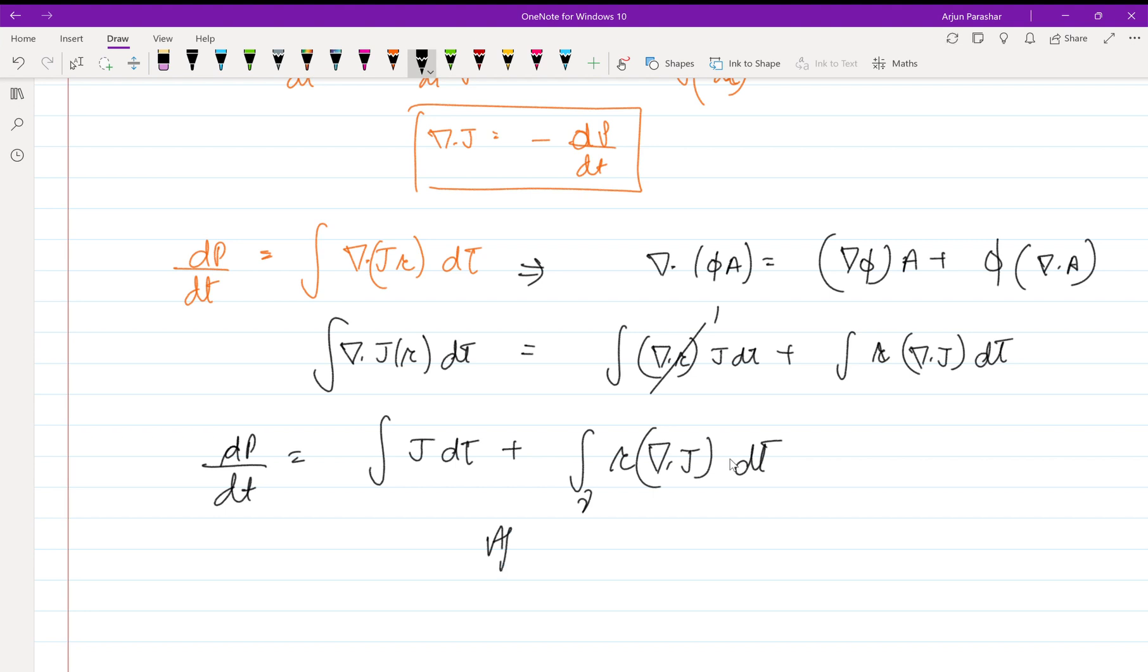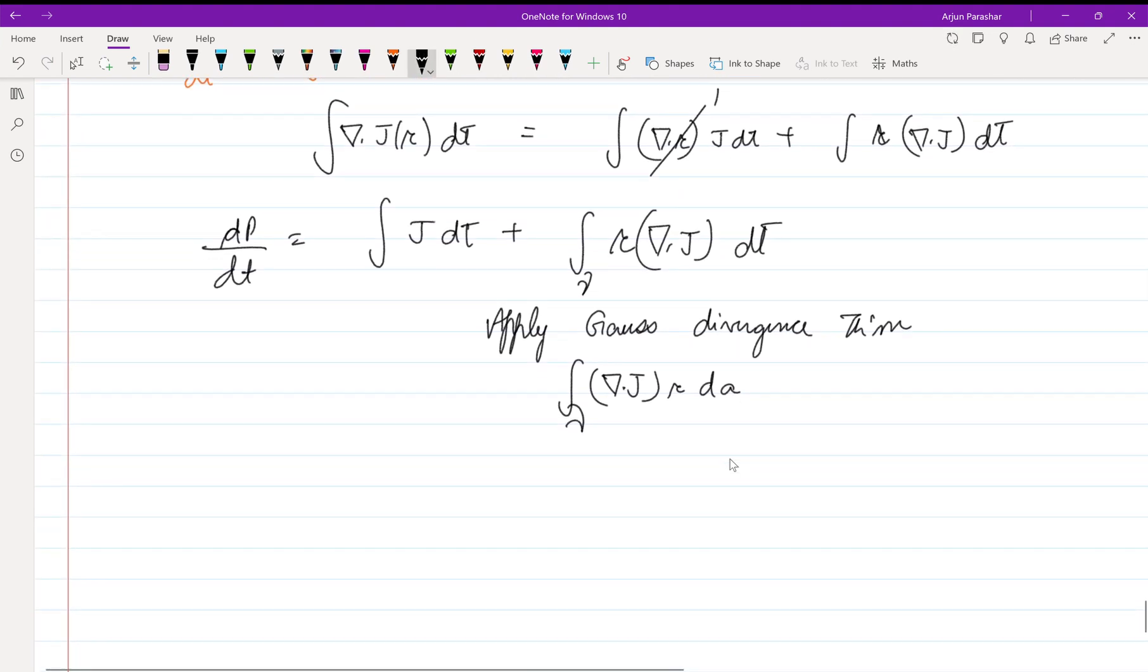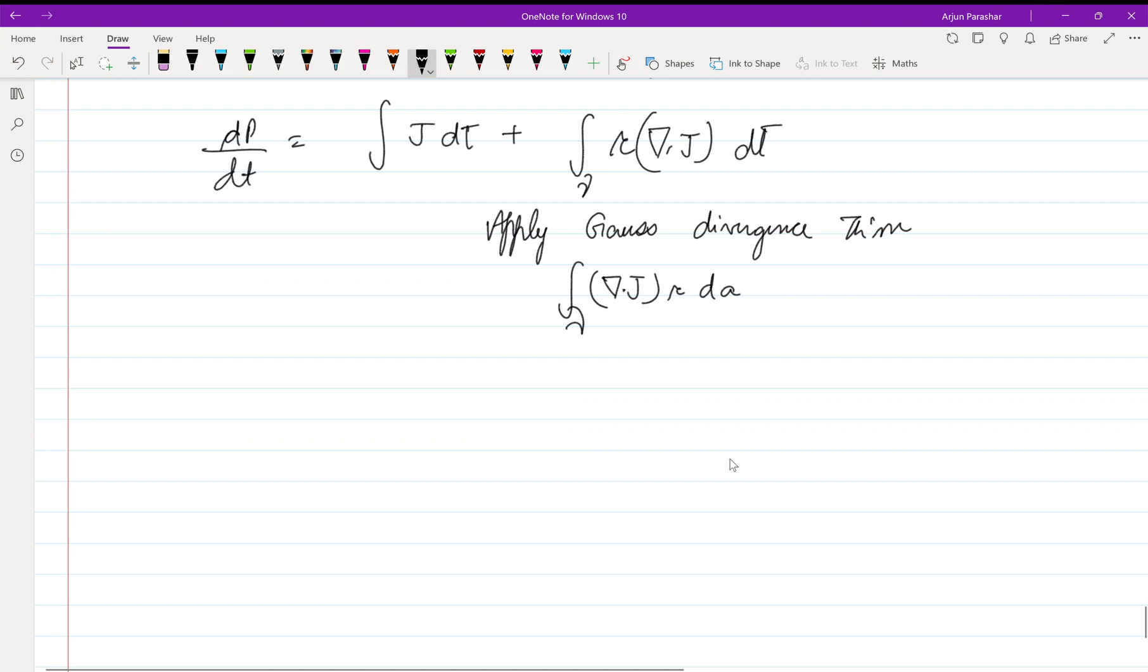Now applying Gauss divergence theorem, I hope you know what is Gauss divergent theorem. For a given volume, it converts into the surface, so it becomes del dot j into r da over a closed volume.